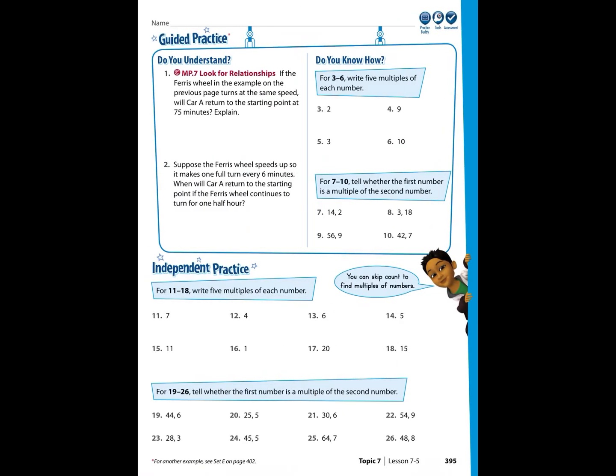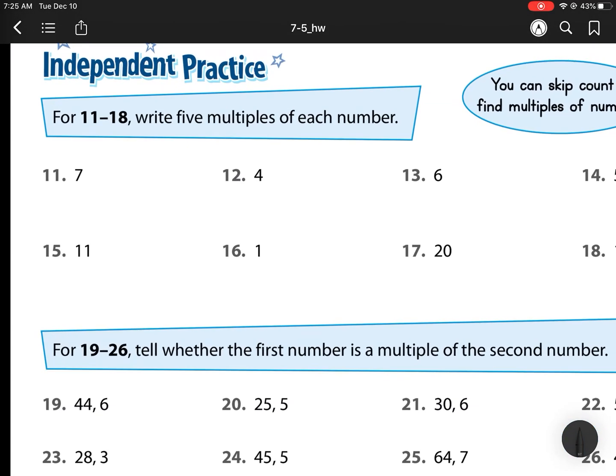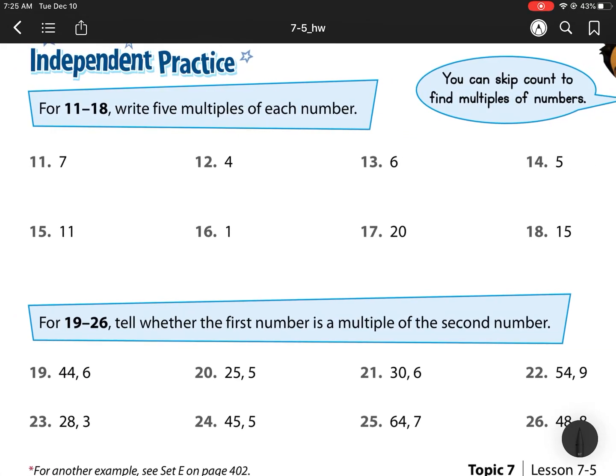We've already done the beginning part in class, so we're going to move on to our next part. Starting with number 11, remind us again, remember we can skip count to find multiples of numbers if we don't know our multiplication facts. So, writing 5 multiples of each number, and if I look, this would be 7, and then skip count by 7 is 14.